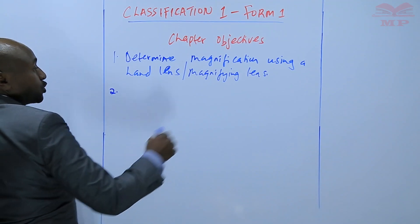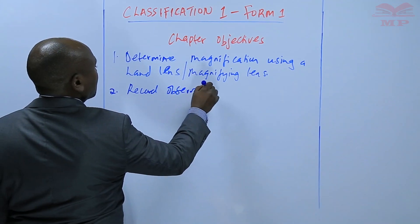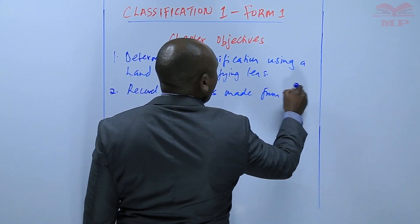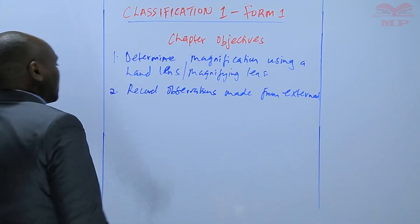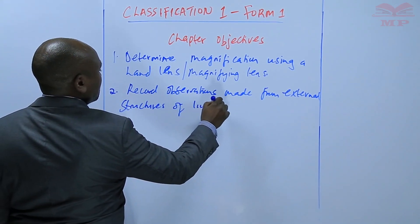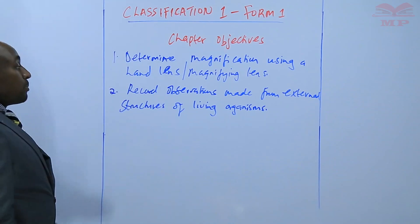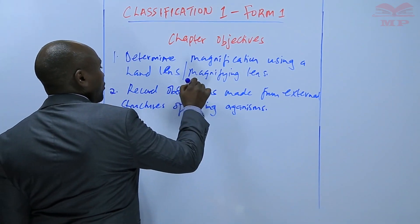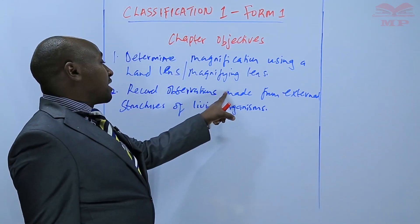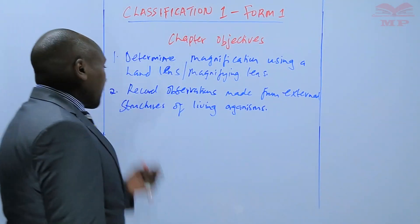Objective number two: the student should be able to record observations made from external structures of living organisms. So a student should be able to make observations from the external structures of living organisms and put those observations into record.